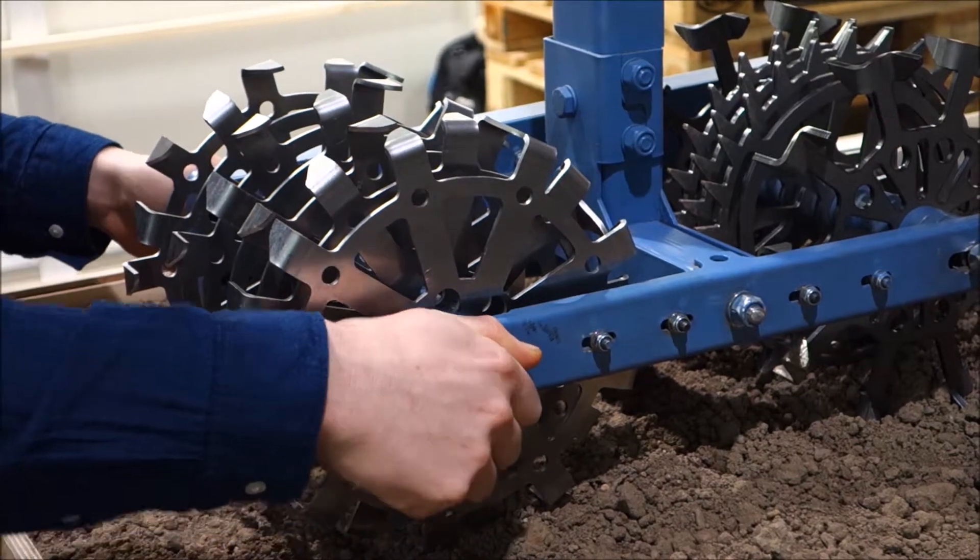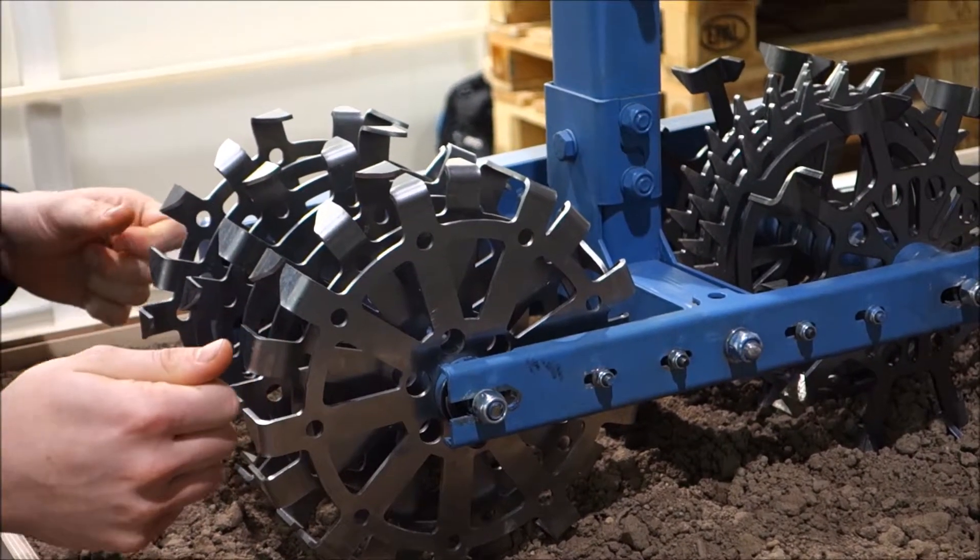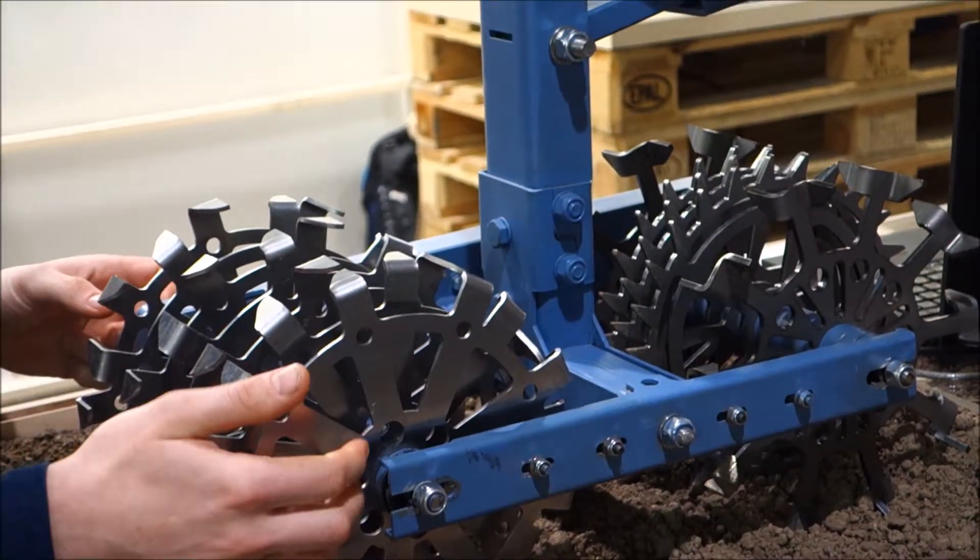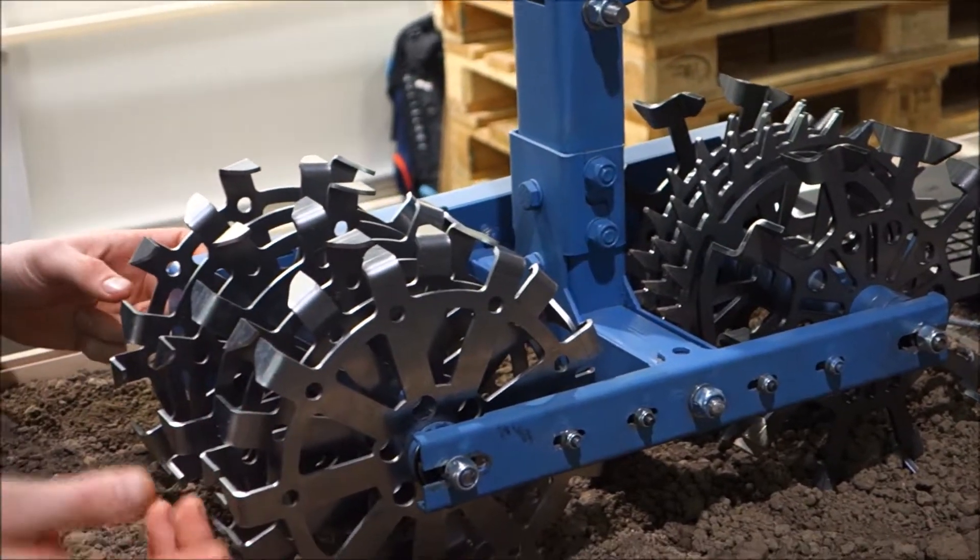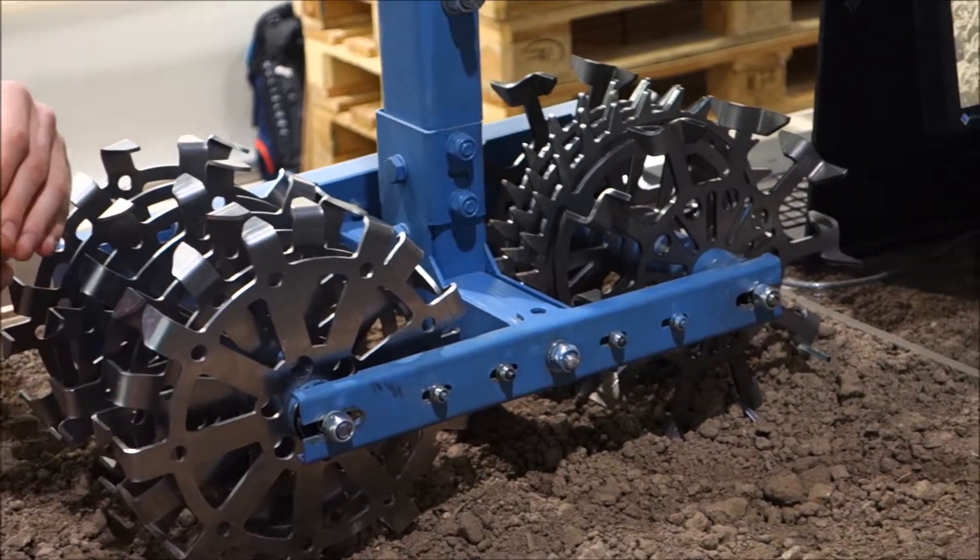By just unbolting those two nuts here, taking out the axle just like a bicycle wheel, and then removing the clip. Put different spacers in there just like you need at your farm.